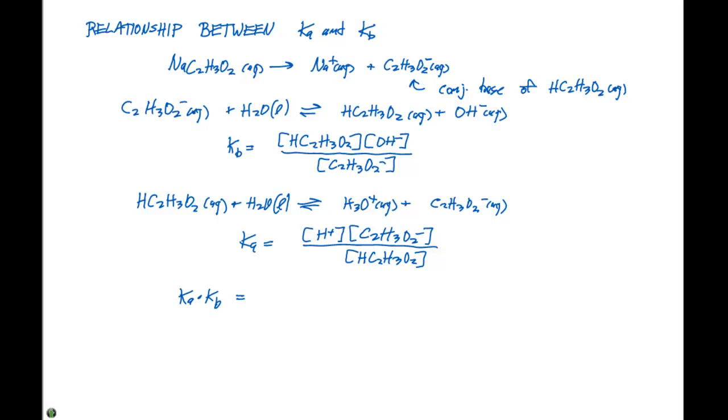Divided by the concentration of HC2H3O2 or acetic acid. So what happens now if I take Ka and multiply Ka times Kb? Our Ka expression is going to be the concentration of H plus times the concentration of C2H3O2 minus divided by the concentration of HC2H3O2. So this is our Ka. Our Kb, on the other hand, is HC2H3O2 times the concentration of OH minus divided by the concentration of C2H3O2 minus.